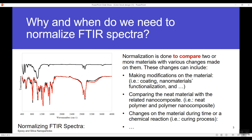The important question here is: why and when do we need to normalize FTIR spectra? Simply, when we want to compare two materials' data where some changes have been made on them. For example, when you make some modification on the material, such as when you apply some coating on the material or when you functionalize your nanocomposite, it's better to normalize their FTIR spectra. Also, when you want to compare the neat material with the related nanocomposite.